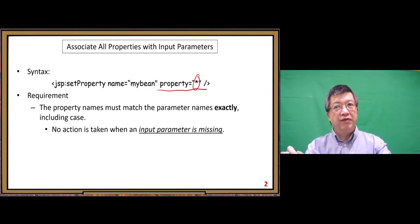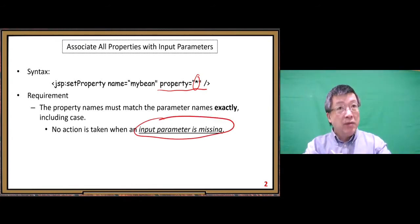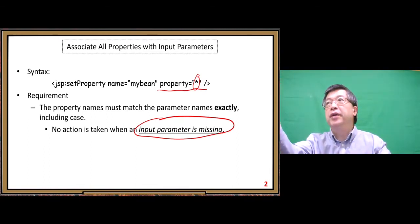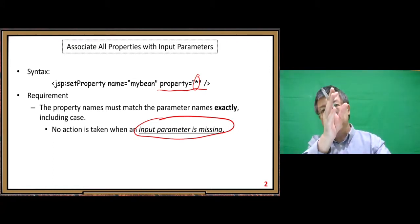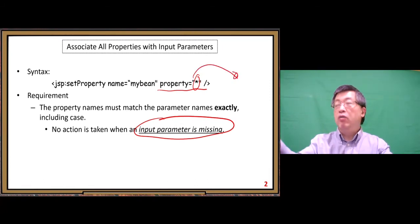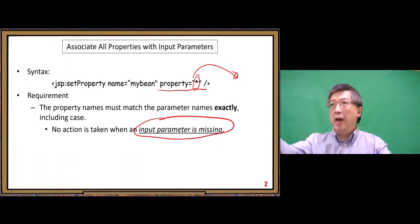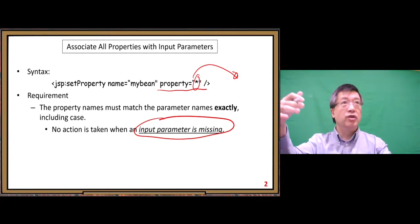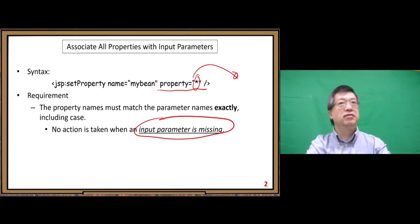But remember: if an input parameter is missing, why do we worry about that? It happens. Sometimes if you misspell the input field name — people can misspell — if you misspell that, it tries to match the property name but couldn't find one in the input field. Mismatched. So no action is taken. When you see that phenomenon, you need to check your data and spell the input field name correctly.